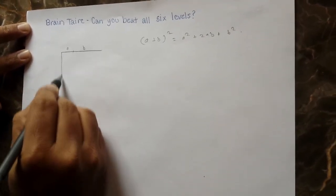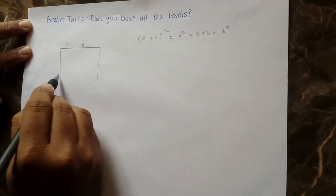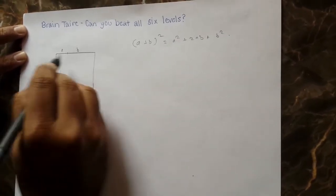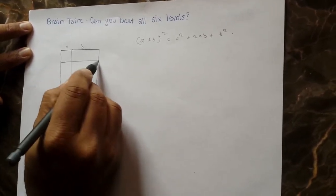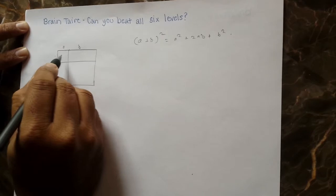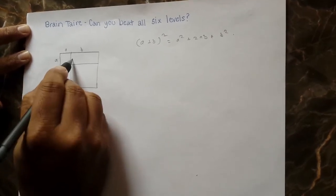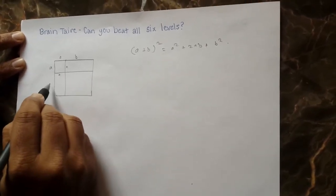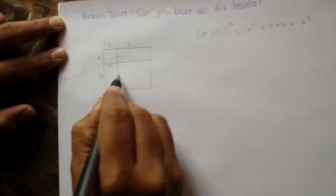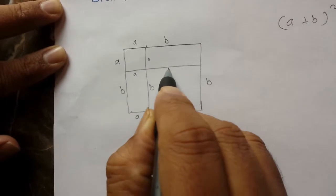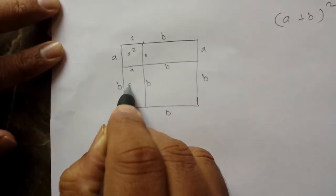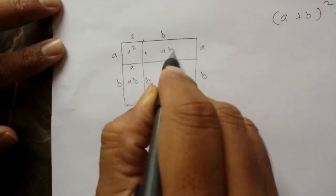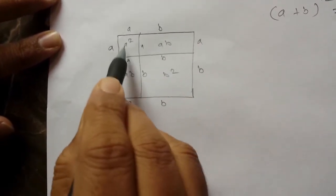Let's do the square by finding all the sides. Here we have a, a — this is b, this is a, b, b, b, b, a. So this is a squared, this is ab, this is ab, and this is b squared.